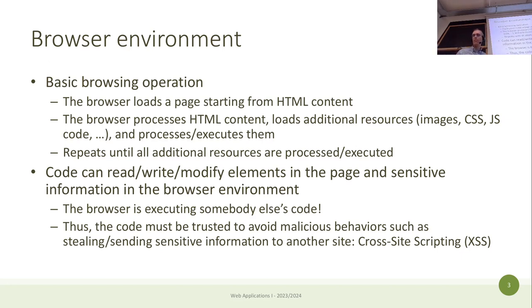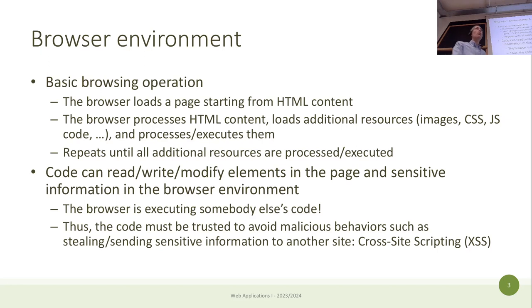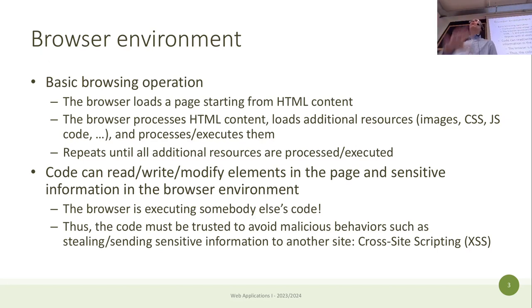Nevertheless, the code can still perform risky operations. Typically the risky operation is stealing sensitive information and sending it to an attacker somewhere in the network. In JavaScript we have an API that allows contacting other web servers, and if JavaScript code can take or steal information from the browser environment, it can send that information somewhere on the network. This is the so-called cross-site scripting, and we will talk a lot about this today.